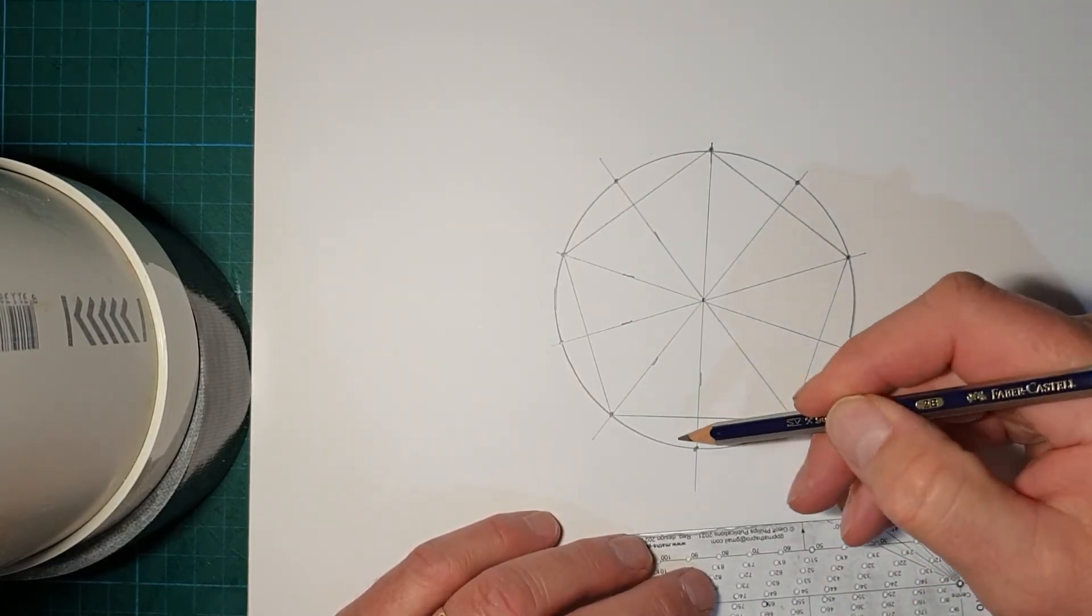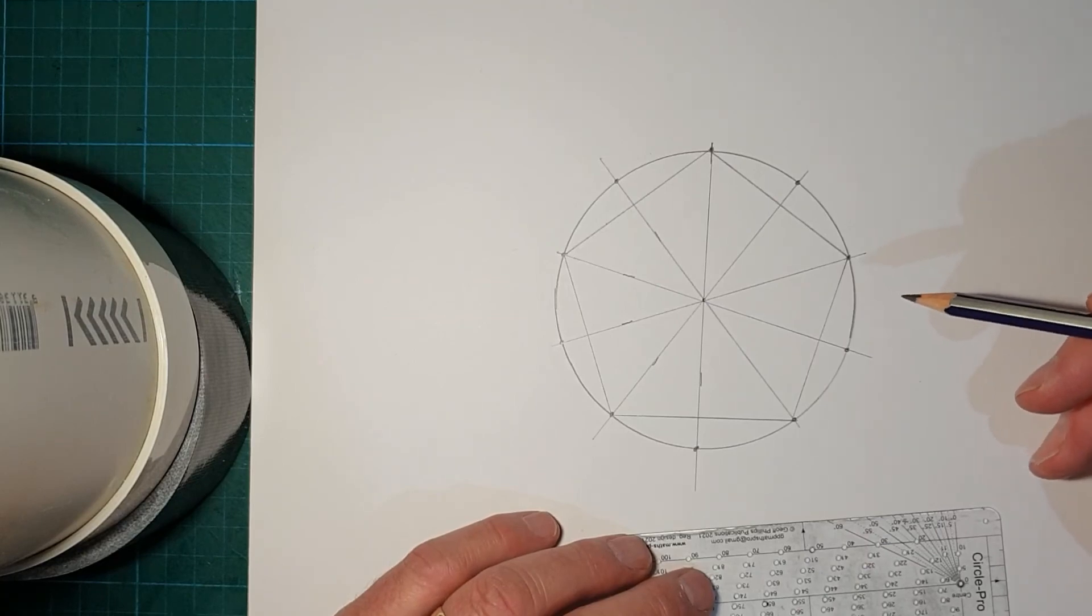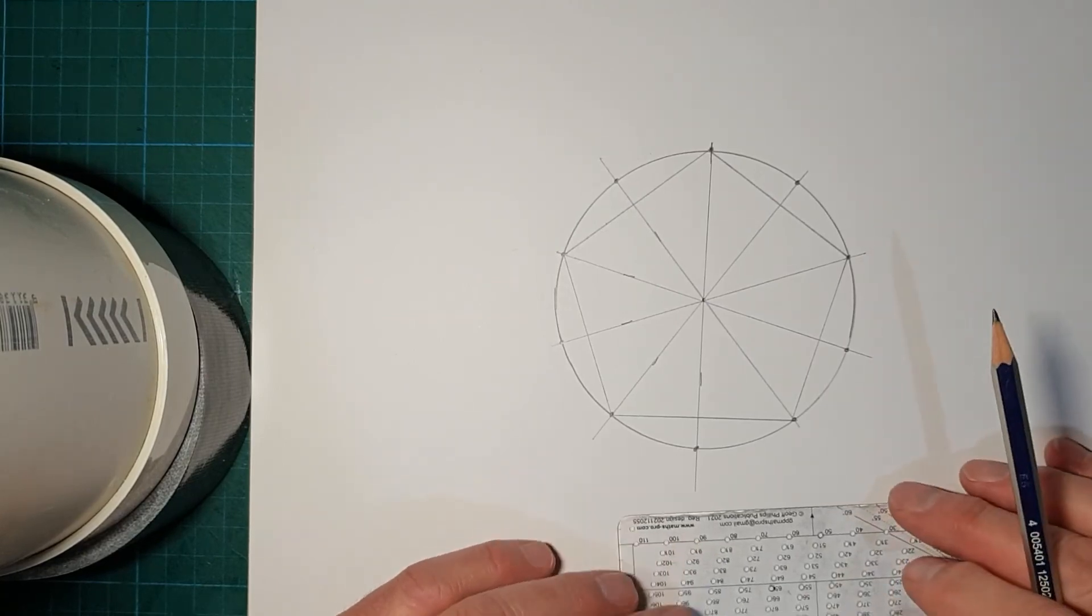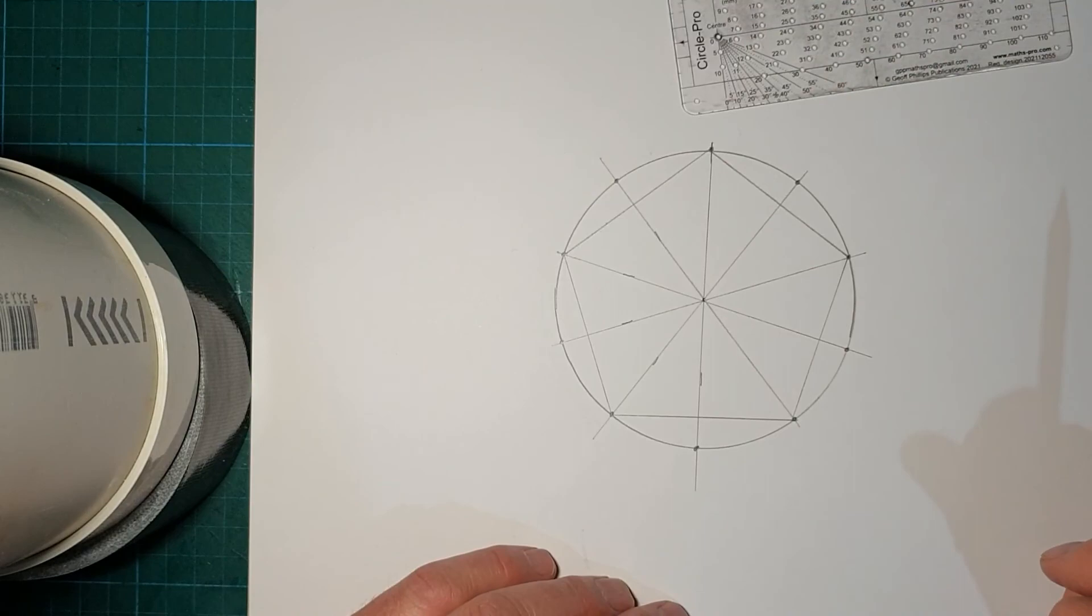If I joined every dot, I'd have a decagon. But I won't do that here. So there's one way to draw a pentagon using CirclePro. Thanks for watching.